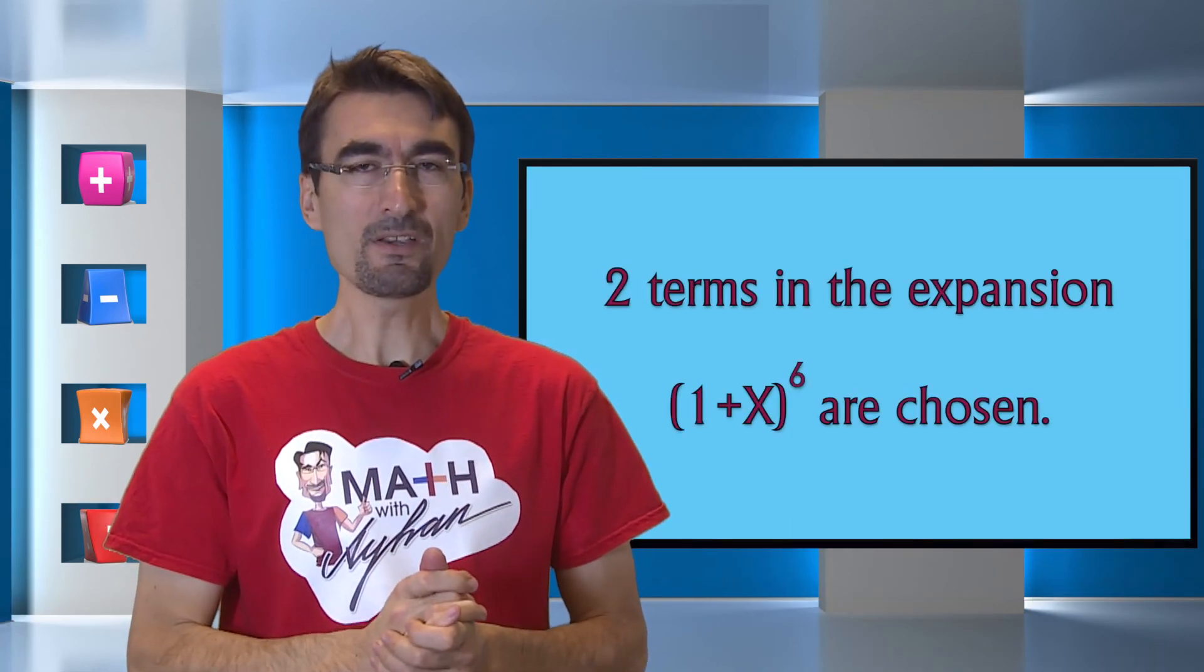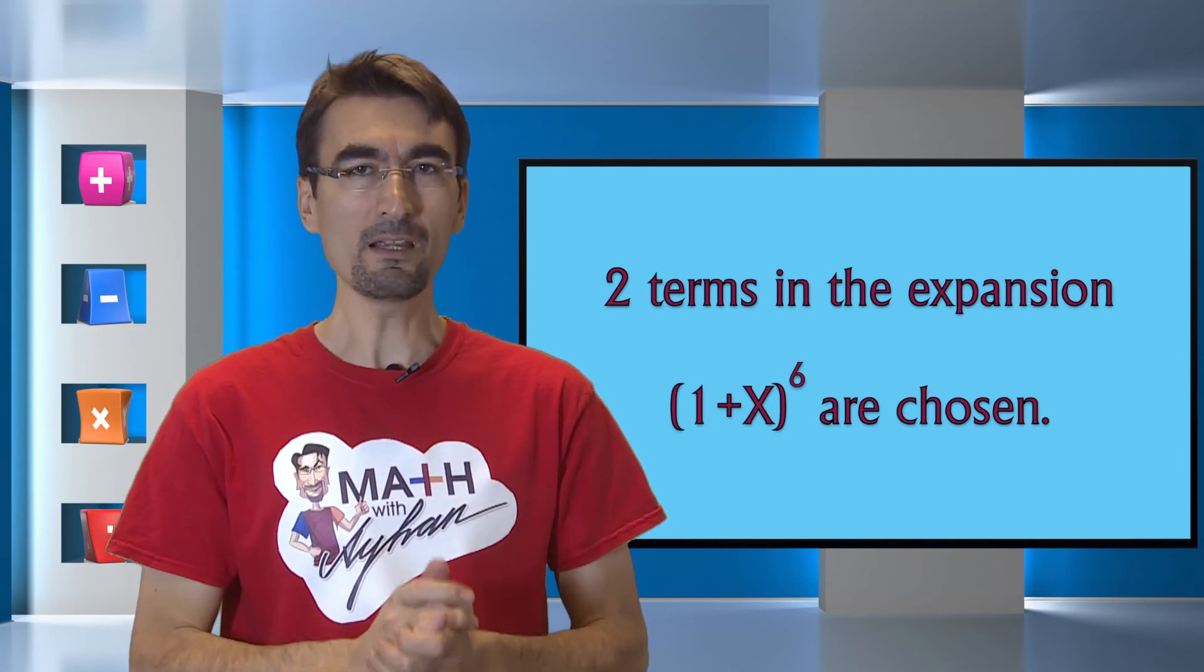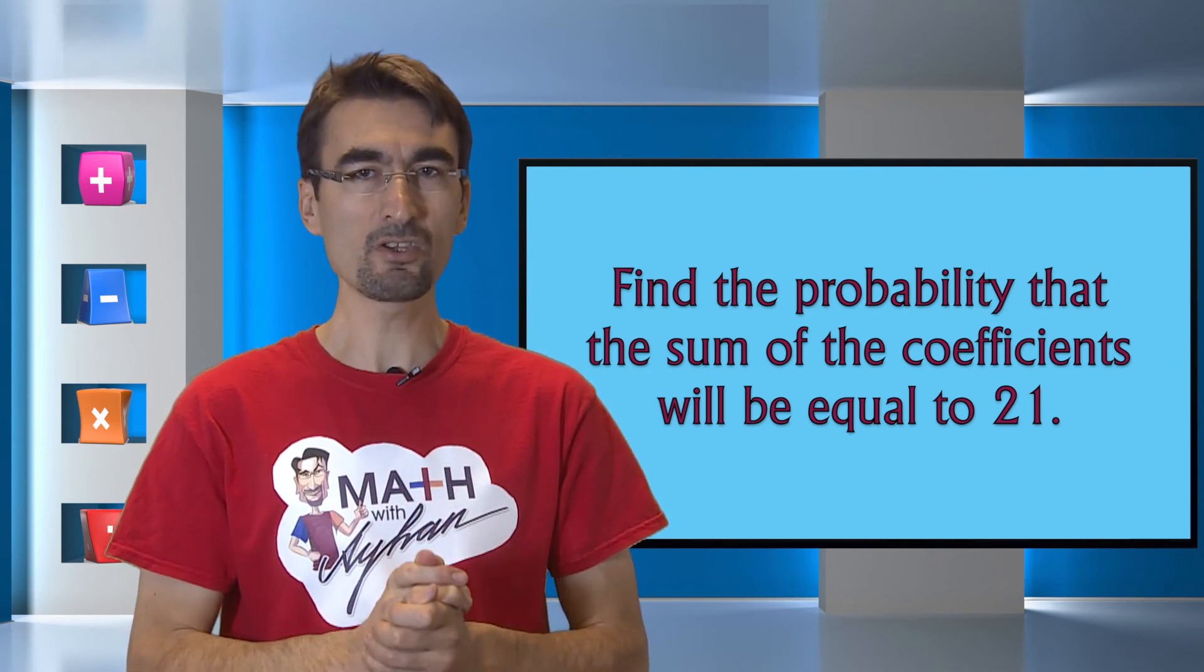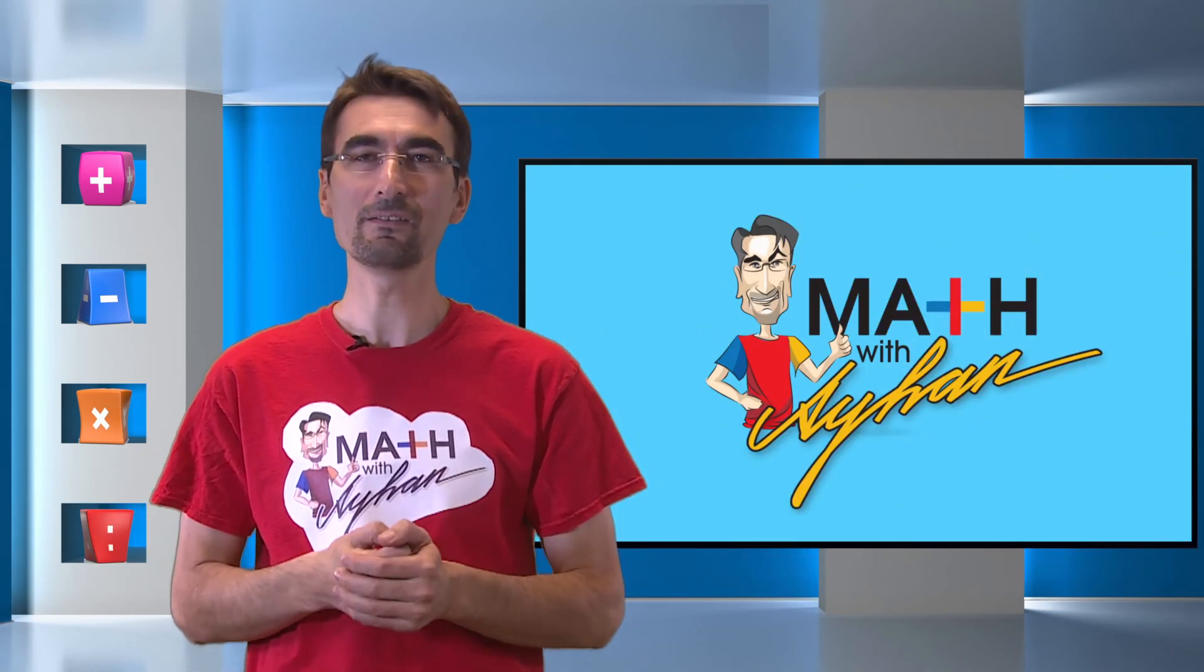Two terms in the expansion of 1 plus x to the 6th power are chosen. Find the probability that the sum of the coefficients we just chose will be equal to 21. Don't forget to watch next week's video for the answer.